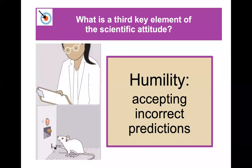The third key element of the scientific attitude is humility — and this is a tough one for some of us. We have to be willing to accept incorrect predictions. As scientists, sometimes we're wrong, and that's okay. We learn from it. We have to be humble in our attitude towards what we're studying.